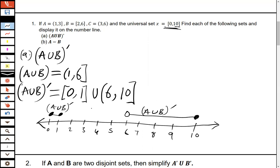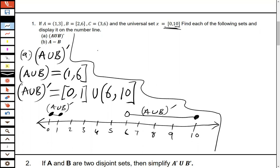I hope there are no questions before moving to part B. For part B, we have A minus B. A minus B is the same as A intersection B complement.